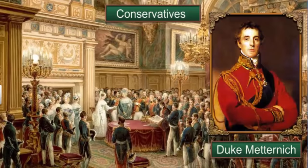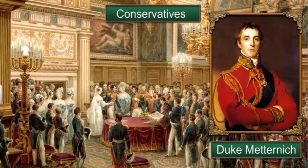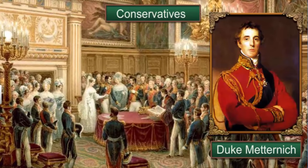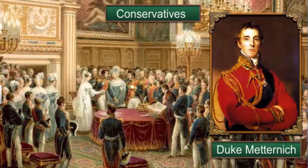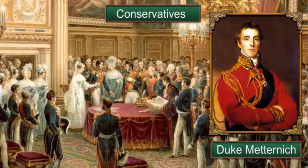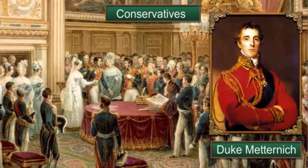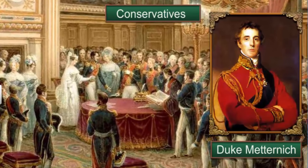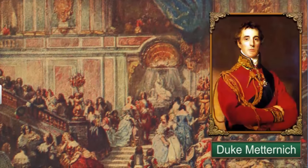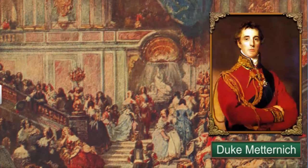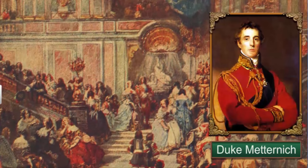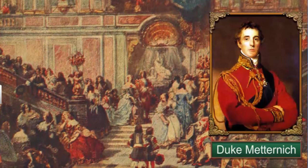The conservatives believed that established traditional institutions of state and society — like monarchy, church, social hierarchies, property, and family — must be protected and preserved. At the same time, they did not propose a return to the pre-revolutionary period. They firmly believed that the aristocratic monarchies of Europe could gain a lot from a modern army, an efficient bureaucracy, a dynamic economy, and the abolition of feudalism and serfdom.